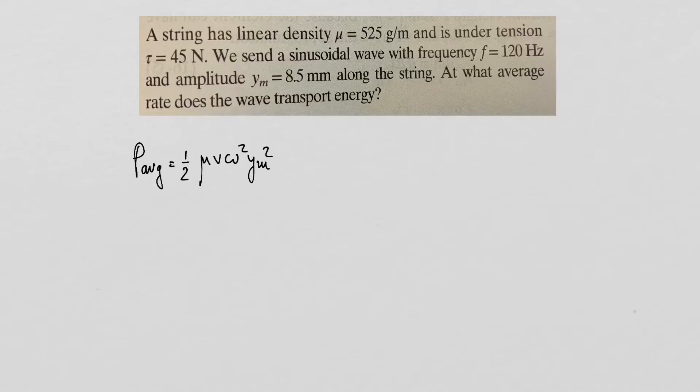The average power is calculated as one half the linear mass density times the wave speed times the angular frequency of the wave to the second power times the amplitude of the wave to the second power. From the statement of the problem...